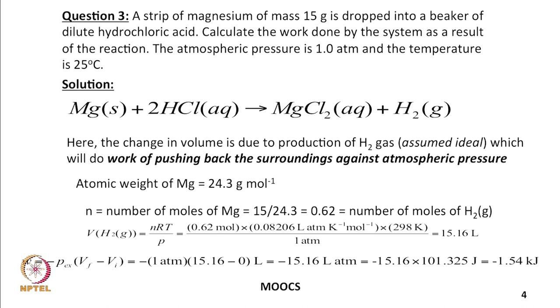The negative value means the work is done by the system — here done by hydrogen gas doing the work of pushing back the surroundings against atmospheric pressure.